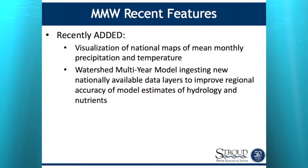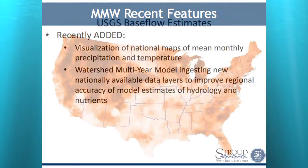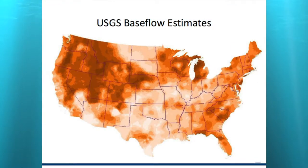Some of the latest additions have really beefed up the power and data richness in terms of precipitation and temperature inputs — the climate drivers that determine how much water ends up as runoff versus evapotranspiration. It's now feeding national datasets on hydrology variables and nutrient concentrations. The multi-year watershed model now draws on USGS base flow estimates nationwide. This model works everywhere in the lower 48 United States. The one exception would be areas with extensive snow cover or ice fields high in the mountains.